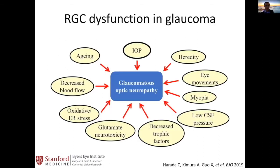The underlying functional reason for vision loss is retinal ganglion cell death or loss of function. The most common factor we can intervene on is intraocular pressure. In terms of etiologies, we also consider blood flow, toxicity due to glutamate, decreased trophic factors, and in recent years, low CSF pressure as contributing causes. There are many reasons why retinal ganglion cells may suffer loss.